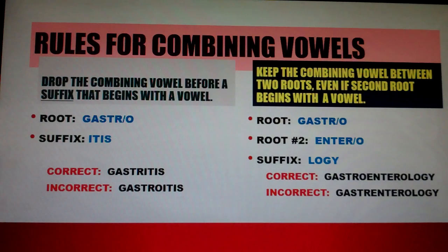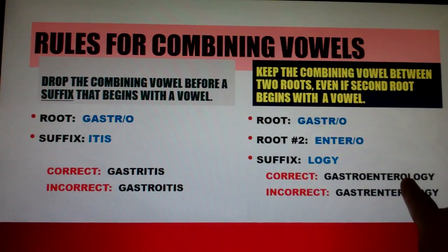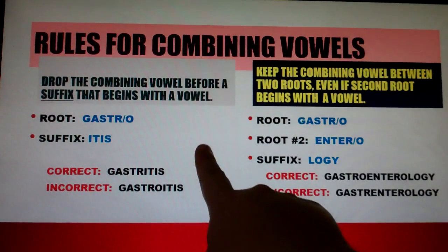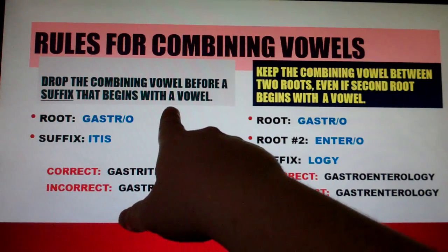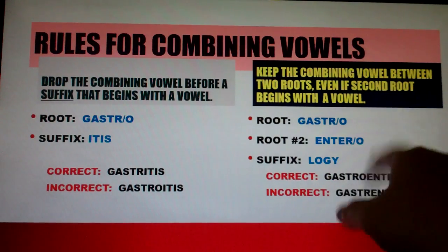Keep the combining vowel between two roots, even if the second root begins with a vowel. For example, root Gastro plus root Entero plus suffix -logy gives the correct form Gastroenterology — keeping the O in Gastro. Removing the O would be incorrect. So the key difference: drop the combining vowel before a suffix starting with a vowel, but keep it before another root.